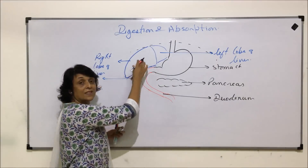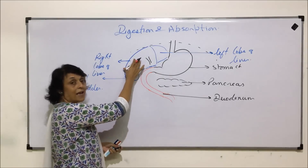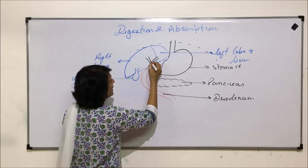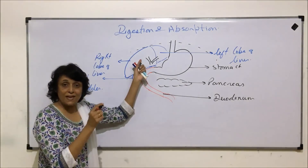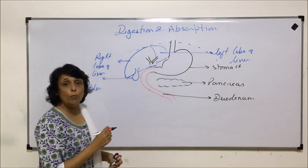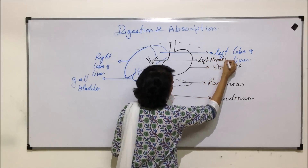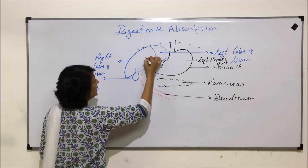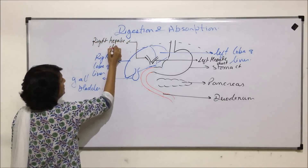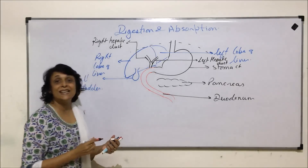From the liver lobes, from the right lobe comes one duct which collects the bile produced by cells in the right lobe. Similarly, a duct collects bile from the left lobe. So there are two ducts collecting bile — one from the right lobe and one from the left lobe. These ducts are known as hepatic ducts, and depending upon the lobe we call them right or left. This duct is called the left hepatic duct and this one is called the right hepatic duct.